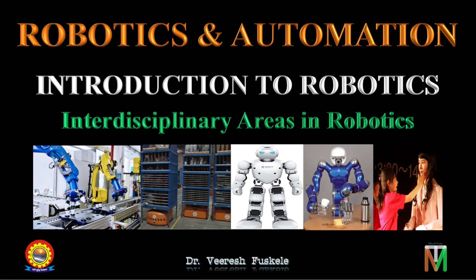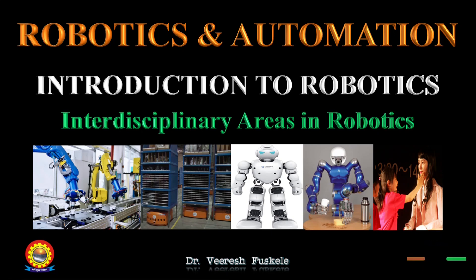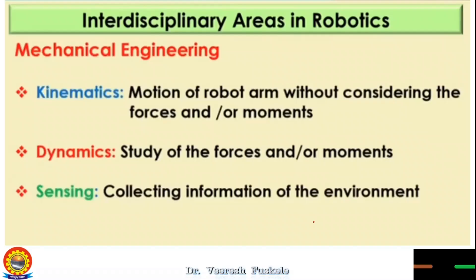Yesterday we discussed that robotics basically comprises of various core areas. It has four independent modules: one is mechanical engineering, another is electrical electronics, then computer science engineering, and there is general science also. General science will have physics and mathematics predominant. Mathematics is very important.